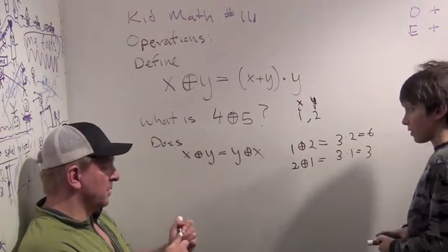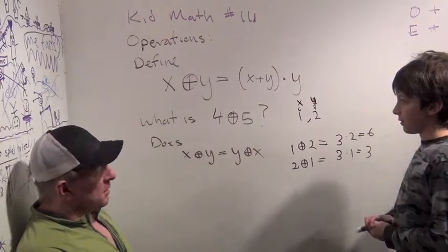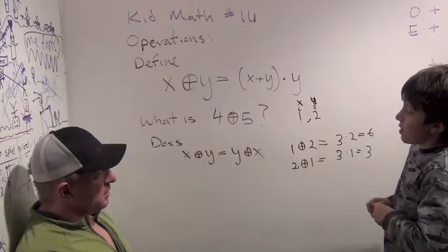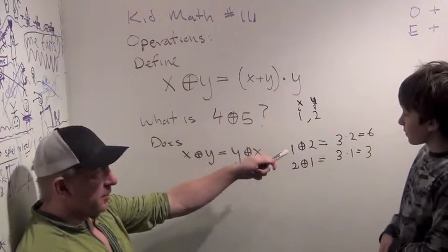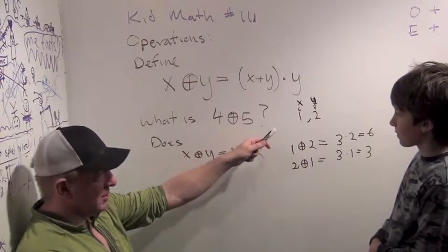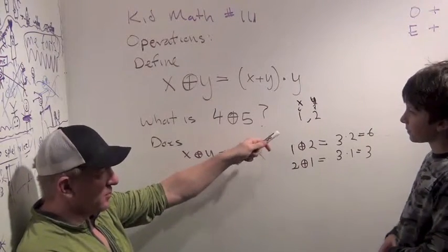Okay. So they're not, it doesn't look like they're commutative. Okay. Good. Good. Not commutative because those are different. Now, if they were the same, that would not have told you it was commutative. Yeah. It would have just told you in this one example it is. So to do it out in general,